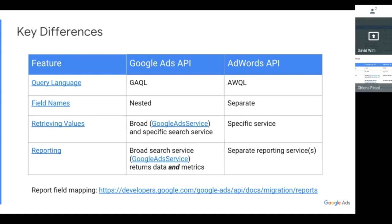There's no separate notion of reports in the new API — there isn't a report service. You just read whatever metric data you want and whatever attribute data you want. So there is no notion of reports anymore; it's not a distinct entity.